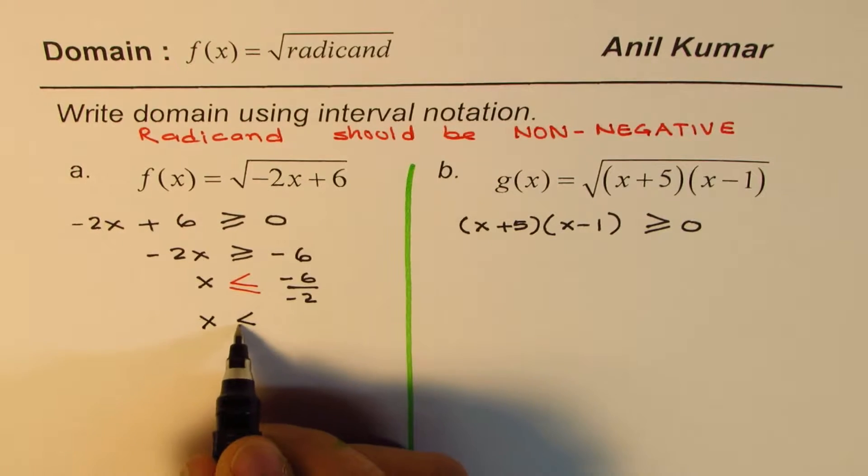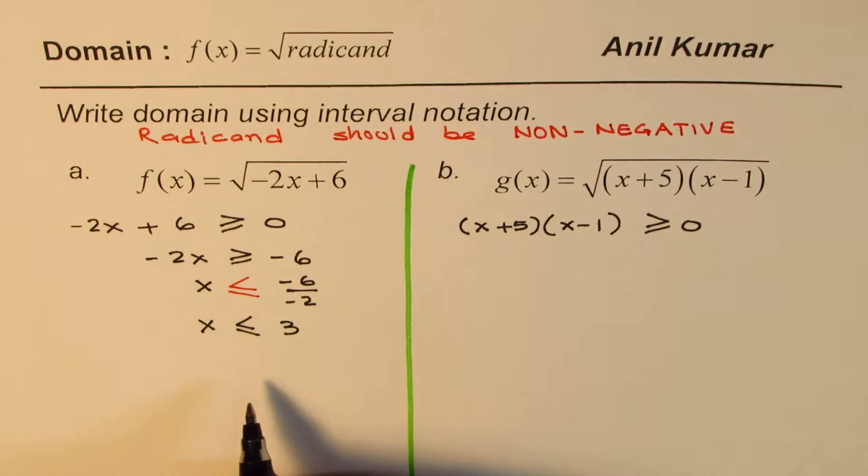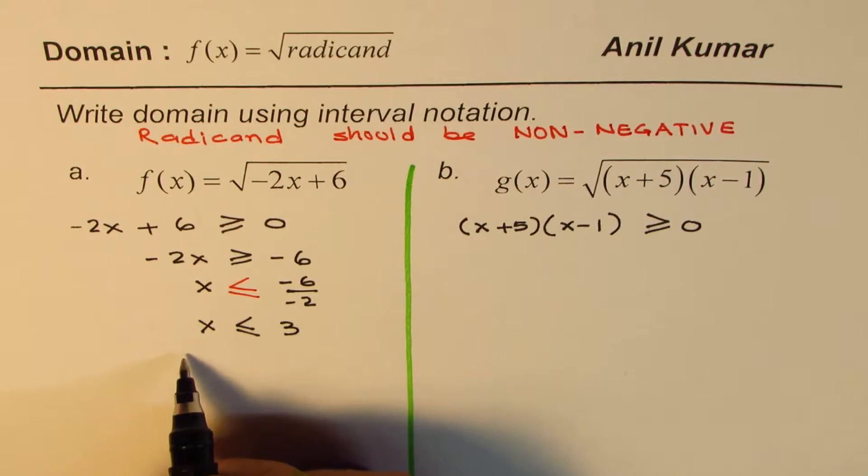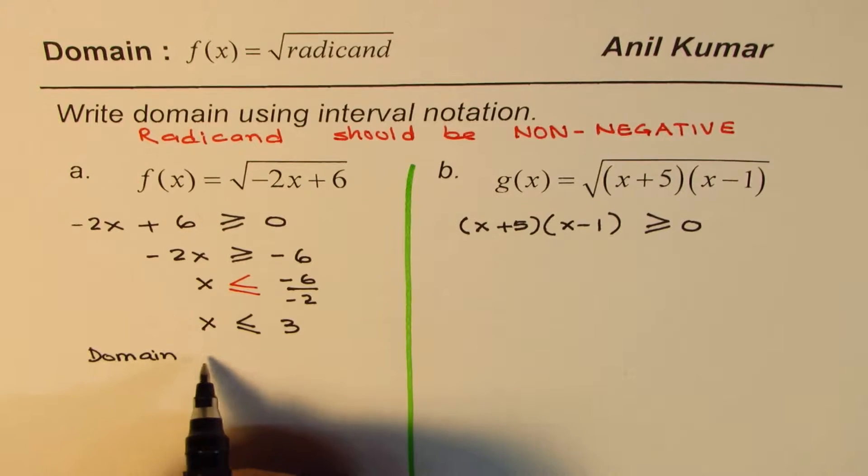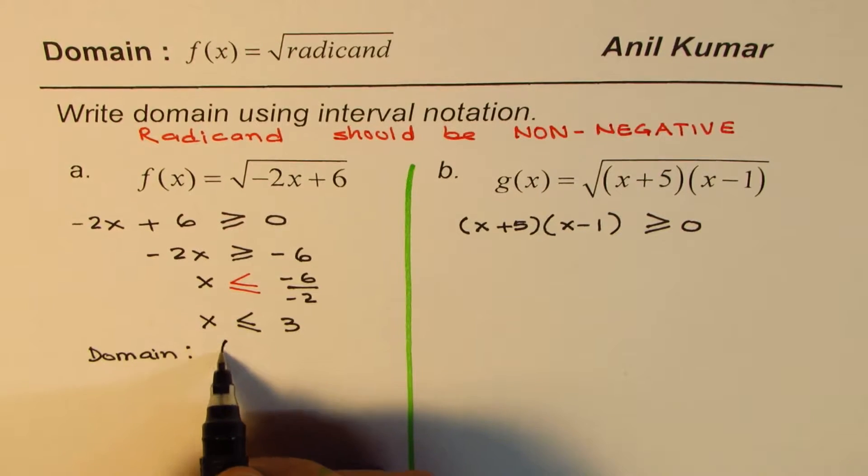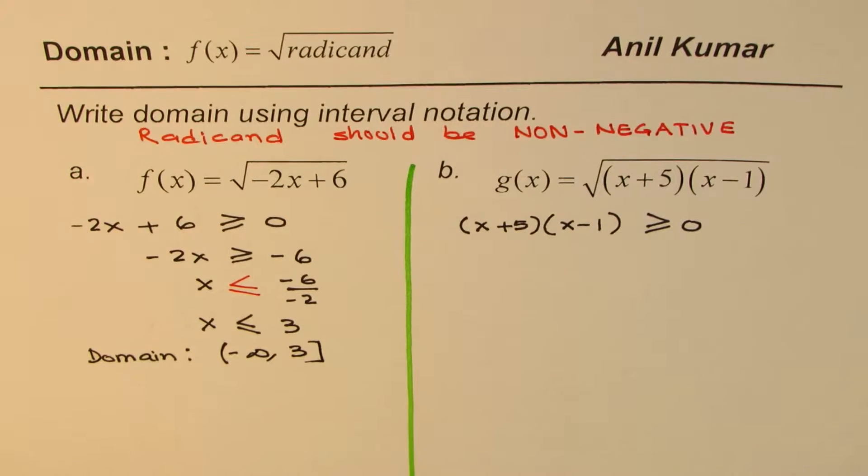What we really get here is that x is less than or equal to 3. In interval notation, this could be written as the domain of this function is from -∞ to 3, where 3 is included.